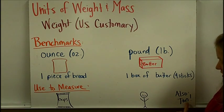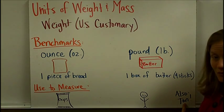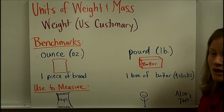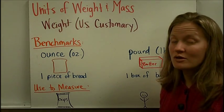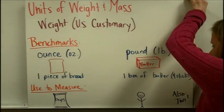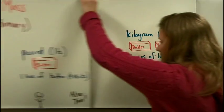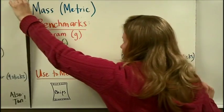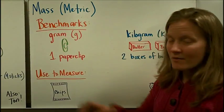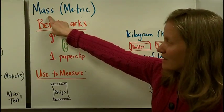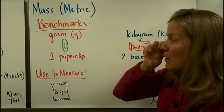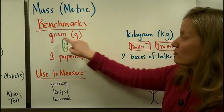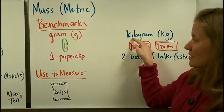We do have one really huge unit, which is a ton, and that is a U.S. customary measurement unit of weight. For measuring mass, which is the metric system, we have grams and kilograms.